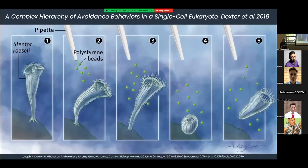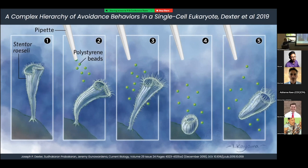A team at Harvard Medical School in 2019 decided to revisit this research and recreate the experiment. They provided a chemical irritant to Stentor Roselli and confirmed Jennings' findings: Stentor Roselli first bends away from the irritant, then tries to spit water back at the thing irritating it, then may close down and contract its whole body before eventually detaching from its substrate and floating away.